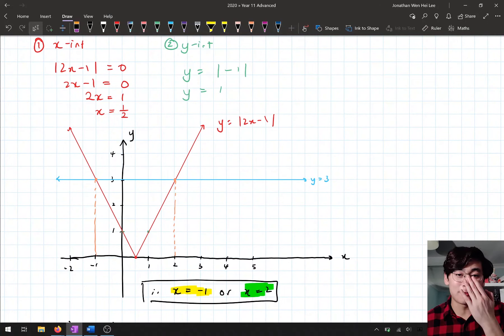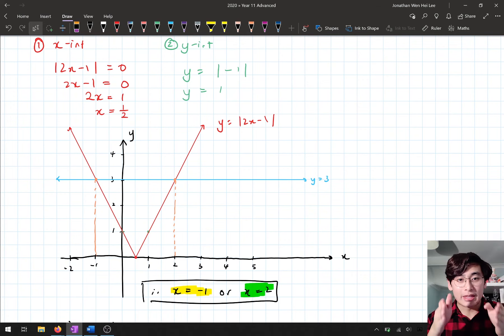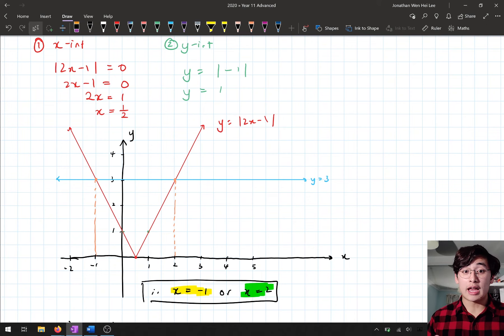And so here we can solve absolute value functions algebraically by doing this method, we can draw our absolute value function, draw a line equating it to the number that we're equating it to, and then look at the x coordinates to figure out what the value that we're looking for is. So hopefully you now have a better idea of how to solve absolute value equations a little bit better.